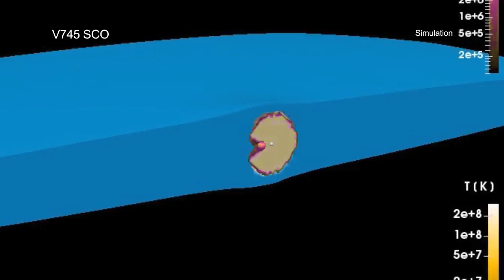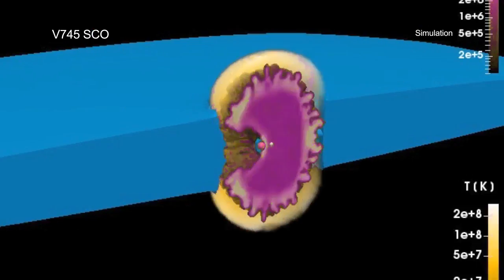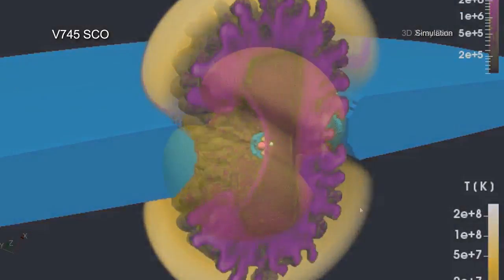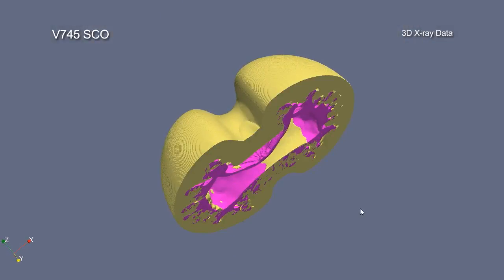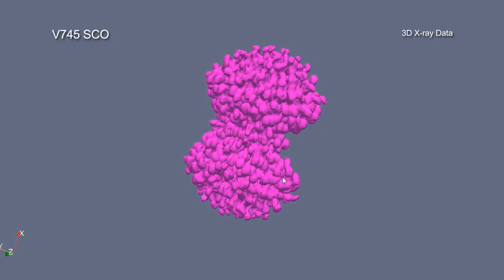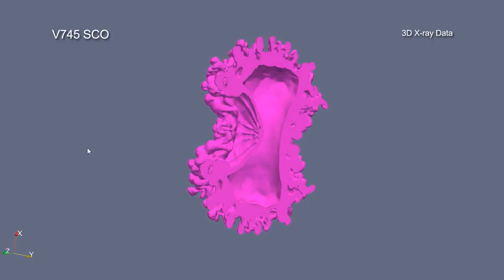Astronomers observed V745-SCO with Chandra a little over two weeks after the 2014 outburst. The X-ray data enabled a team of researchers to construct a three-dimensional model of an explosion from V745-SCO for the first time.